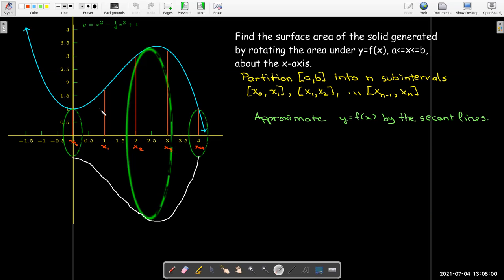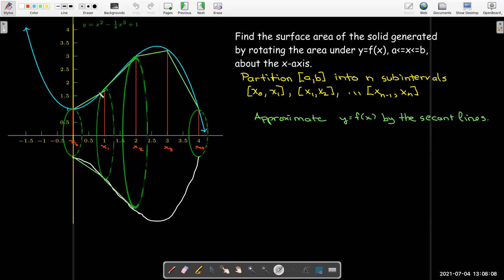Then what I'm going to do is approximate the function on each of these slices just by the secant line here. And then I'm going to calculate the surface area of each of these little slices. By the surface area I'm just talking about the outside, the lateral surface area.